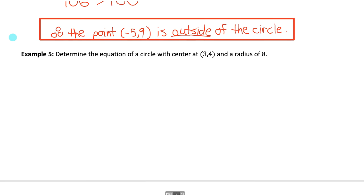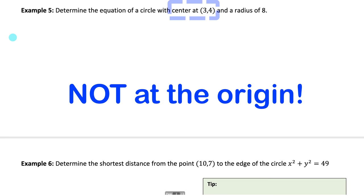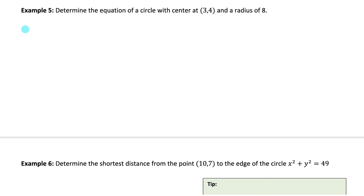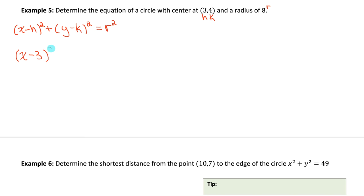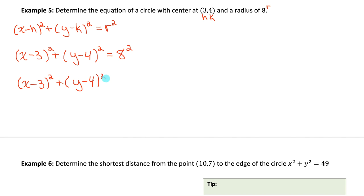Now we're finding the equation of a circle where the center is not at the origin. The equation is: x minus h squared plus y minus k squared equals r squared, where (h, k) is the center. In this case, the center is (3, 4), so h equals 3 and k equals 4, and the radius r is 8. Substituting in, the equation is x minus 3 squared plus y minus 4 squared equals 8 squared. Simplifying, the final answer is x minus 3 squared plus y minus 4 squared equals 64.